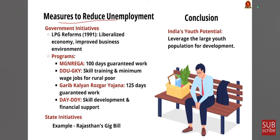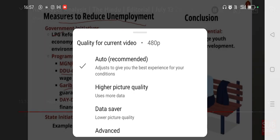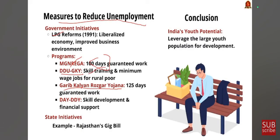Measures to reduce unemployment: the government has taken various reforms over the period. The first is LPG reforms of 1991, which liberalized the economy and improved the business environment. Programs such as MGNREGA have created 100 days of guaranteed work and include one-third reservation for women. The second is Deen Dayal Upadhyaya Yojana, which focuses on skill training and minimum wage jobs for the rural poor. The third is Garib Kalyan Rojgar Yojana, providing 125 days of guaranteed work as an evolution of MGNREGA. The last is DAY-NRLM, focusing on skill development and financial support, with certain state initiatives like Rajasthan's gig bill also addressing unemployment.